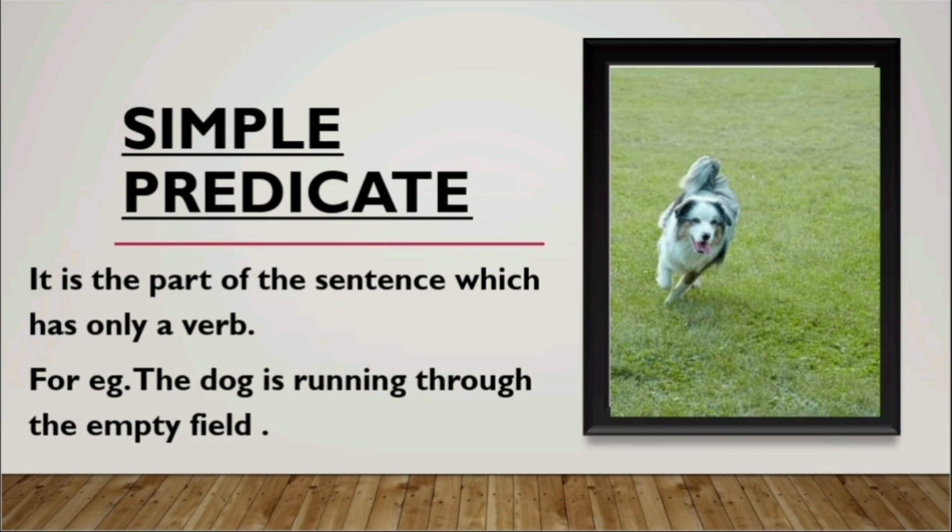Have a look at this example: 'The dog is running through the empty field.' Here, 'is running' is a verb phrase and there is no modifier between the verb parts. So a simple predicate contains only the verb or verb phrase.